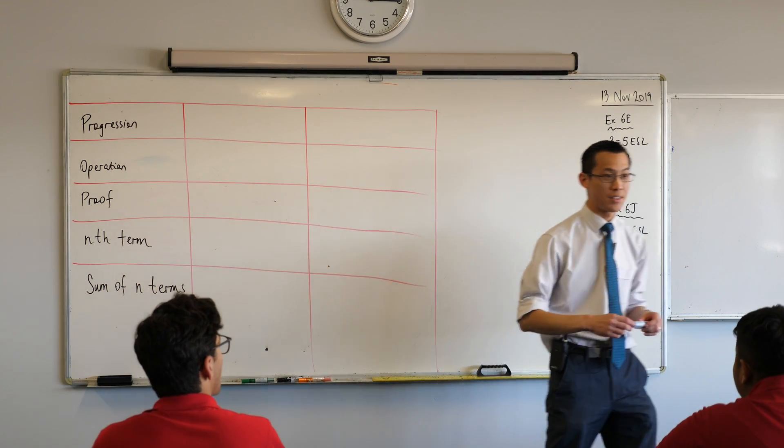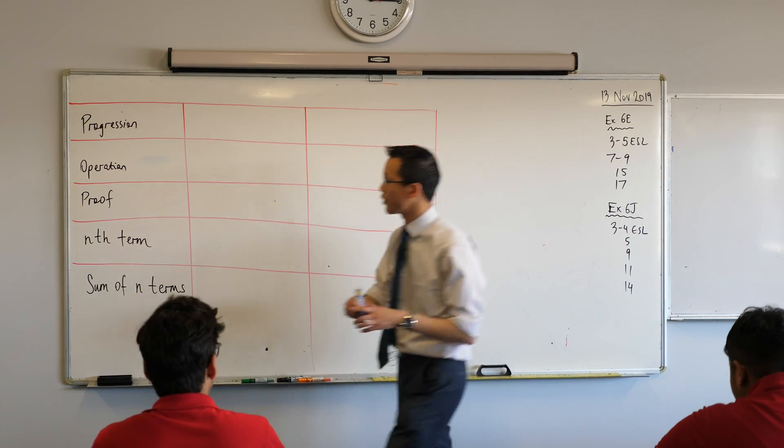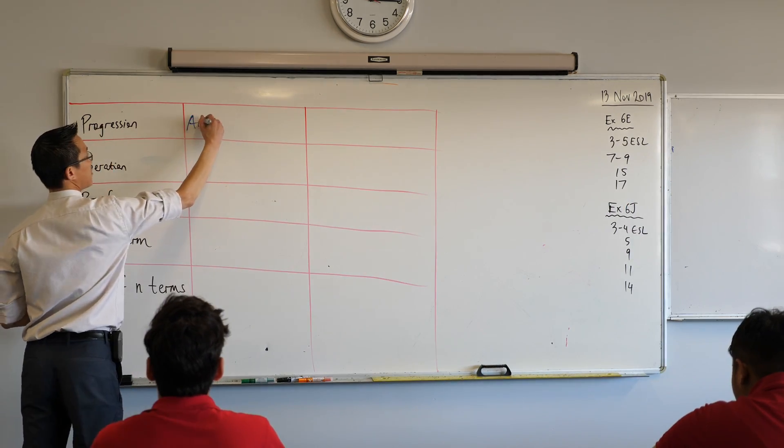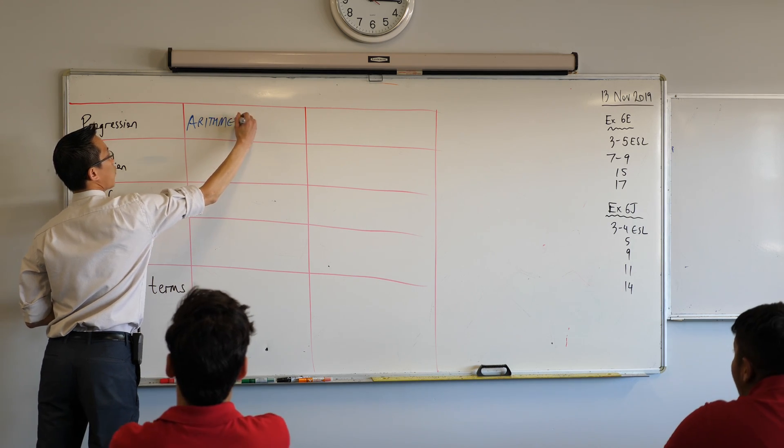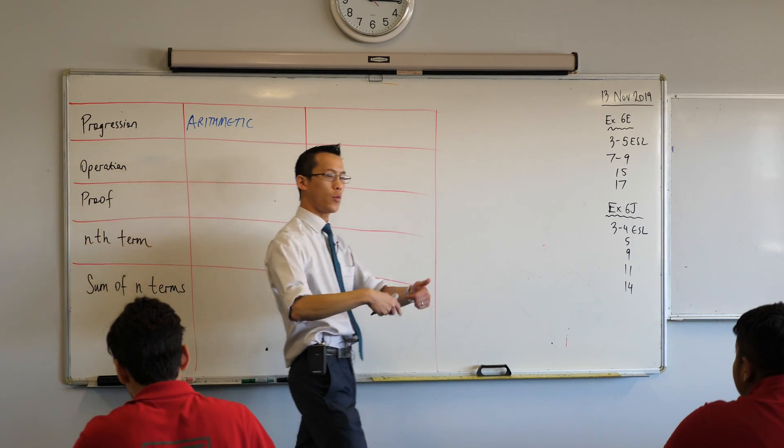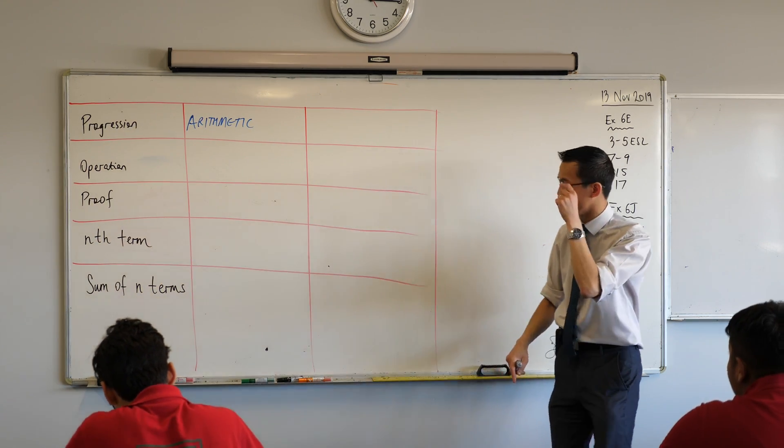What was the kind of progression that we had a look at? Arithmetic, very good. So this is our first one in here and what's going to proceed from here is stuff that we established over the last two lessons.